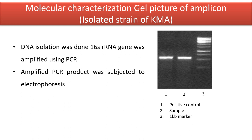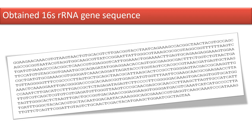Moving on to the molecular characterization. 16S rRNA partial genome sequencing was done on the selected strain KMA. Amplification was done by PCR. The amplified PCR product was subjected to electrophoresis and visualized under ethidium bromide. The bands obtained are shown in this picture. This is the obtained 16S rRNA sequence of the isolated strain. It was identified to be close to Staphylococcus lugdunensis, a gram-positive bacteria.